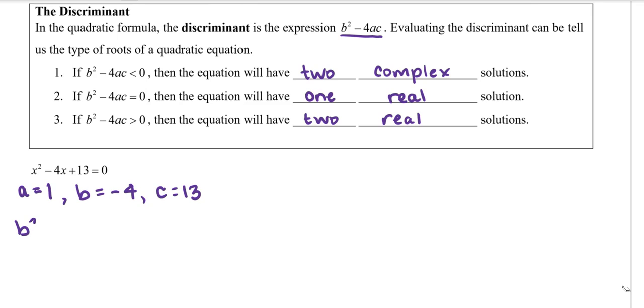So b squared minus 4ac, well, b squared, that's negative 4 squared minus 4 times a is 1 times c is 13. You may want to pause the video, see if you can work this out on your own, and then figure out which of the three categories it fits into.